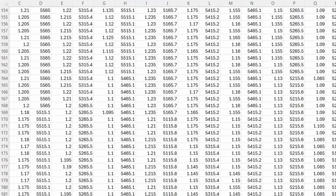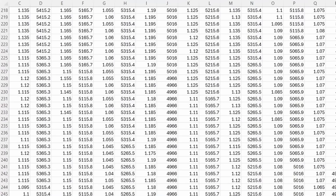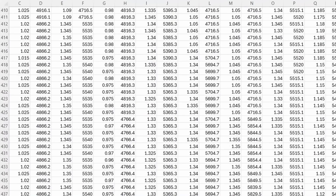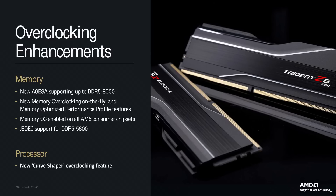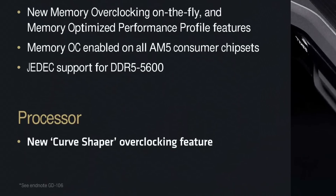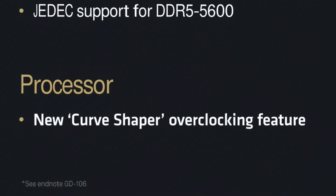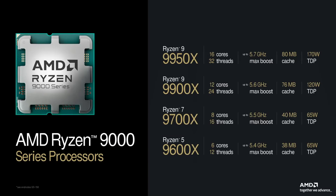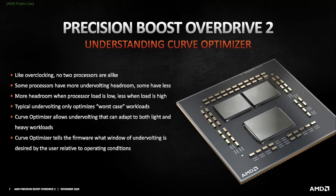I analyzed over 100,000 voltage frequency points to figure out how AMD Curve Shaper works. Curve Shaper is a prominent new overclocking feature AMD announced alongside its Zen 5 Ryzen 9000 Granite Ridge processor lineup. It's an evolution of the Curve Optimizer tool enthusiasts have been using since Zen 3 Ryzen 5000.